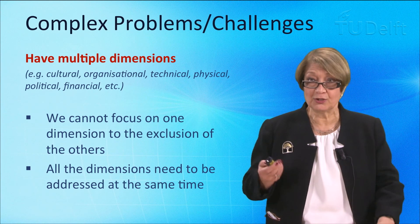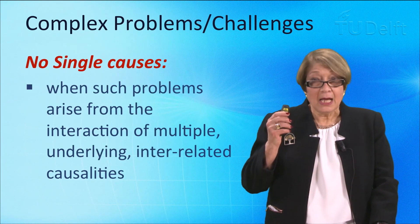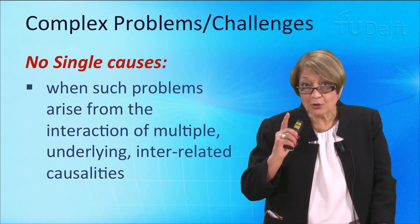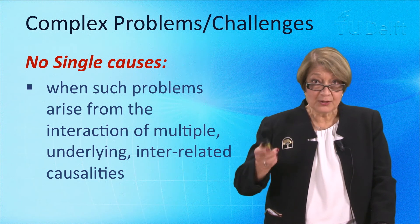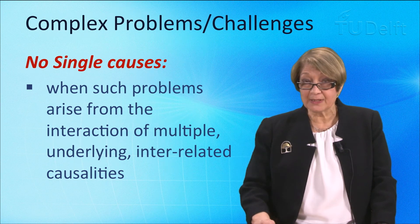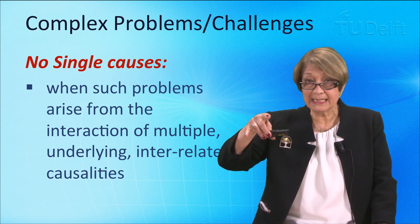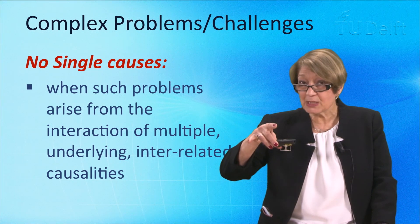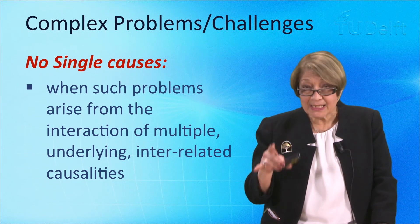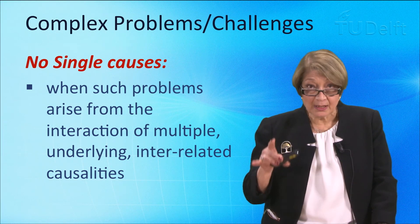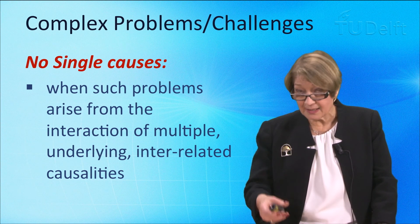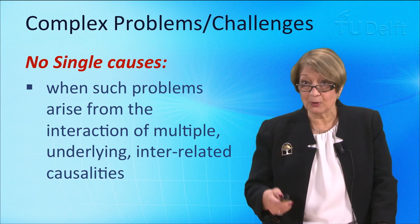We very often focus on a single cause — we say A causes B. For example, if I were to drop this, it will fall because of gravity; I can explain that as linear causality. But complex problems cannot be explained in that way. They have multiple, interacting, co-evolving causalities. So how do we actually go about understanding the multiple dimensions and the multiple causalities?